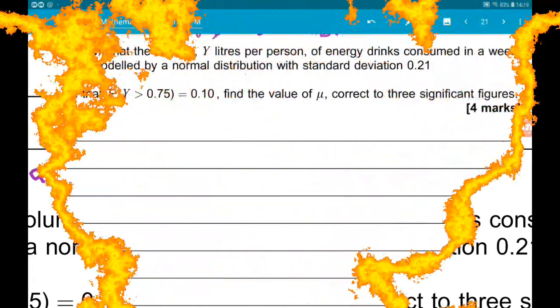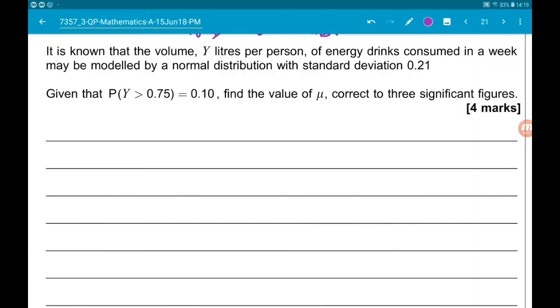Part D: it is known that the volume Y liters per person of energy drinks consumed in a week may be modeled by a normal distribution with standard deviation of 0.21. Given that the probability that Y is greater than 0.75 is equal to 0.1, we want to find the value of mu correct to three significant figures.